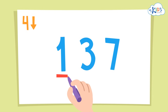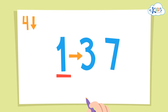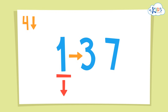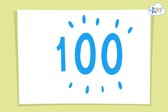For 137, since we're rounding to the hundreds, we'll have to look at the number in the tens place. The three in the tens place tells us to round down. We'll round 137 down to 100. You round the number in the hundreds place and make the numbers in the ones and tens places zeros.